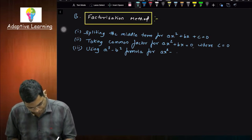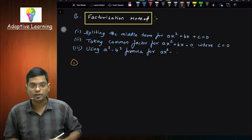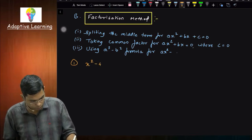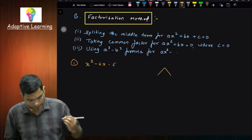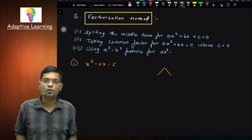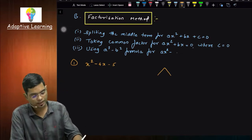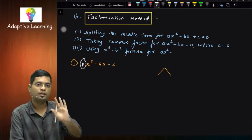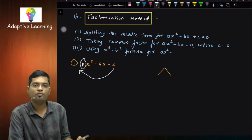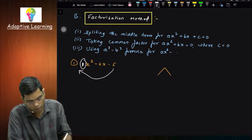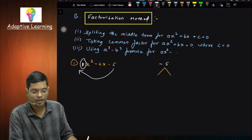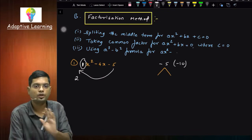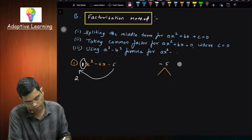Splitting the middle term — I'll give an example. The example is x² minus 4x minus 5. Okay? Now let's see what you have to do here. First of all, this number — if there is 1 here, then there is no problem. If there is supposed to be 2, then you can write here minus 10. This case is not, so I'll remove it.